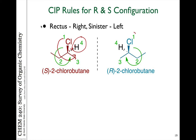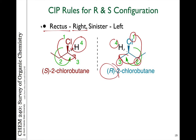For the other enantiomer, or mirror image, we have the same priority groups — one, two, three, and four. Hydrogen is pointing away from us, and in this case, going from highest to lowest priority, we're going in a clockwise direction, or going to the right — right for rectus. So this would be S-2-chlorobutane on the left, and R-2-chlorobutane on the right.